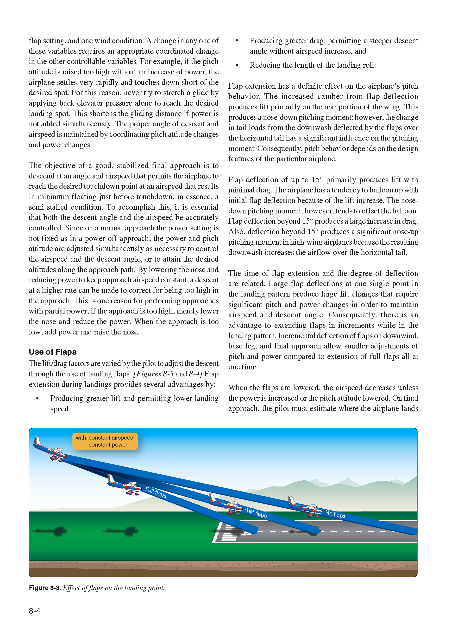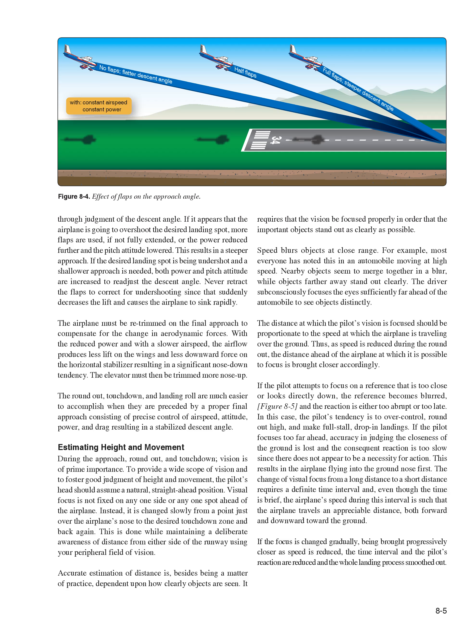Incremental deflection of flaps on downwind, base leg, and final approach allows smaller adjustments of pitch and power compared to extending full flaps all at once. When the flaps are lowered, airspeed decreases unless power is increased or pitch attitude lowered. On final approach, the pilot must estimate where the airplane lands through judgment of the descent angle. If the airplane is going to overshoot the desired landing spot, more flaps are used or power is reduced further and the pitch attitude lowered. Never retract the flaps to correct for undershooting, as that suddenly decreases lift and causes the airplane to sink rapidly.